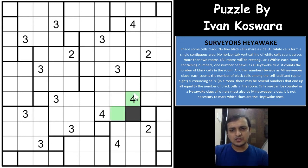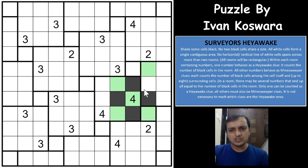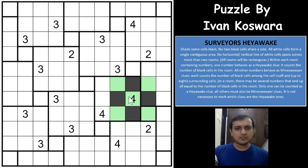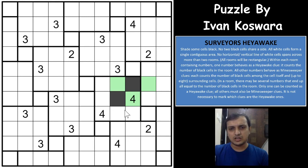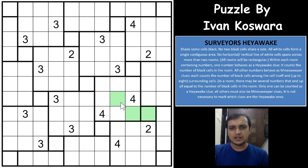Why is that? If you shade even one of those 4 middle-edge cells, the other 3 cells will also have to be shaded to fulfill the count, and you will form a closed loop where a white cell is stranded in between, which is not possible. In a Surveyor's Heyawake puzzle, all white cells must be connected. So those 4 middle-edge cells will never be shaded when it is a Minesweeper clue of 4.